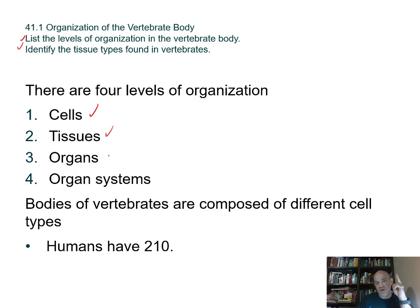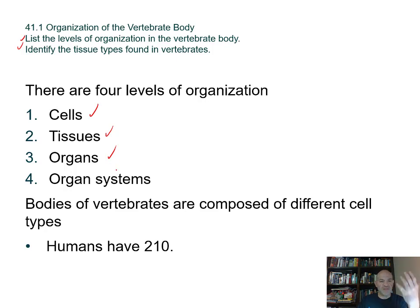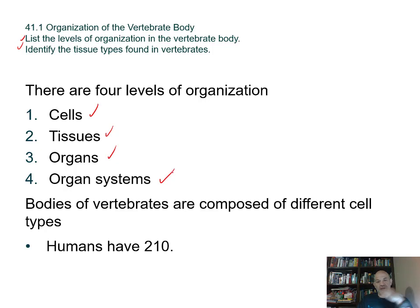Two or more tissues are organized to make an organ, like a stomach or a muscle in your arm or leg — that's an organ. It's more than just muscle tissue; there's connective tissue as well. Then organ systems, like your digestive or respiratory system. One step higher than that is the entire organism, the vertebrate animal.